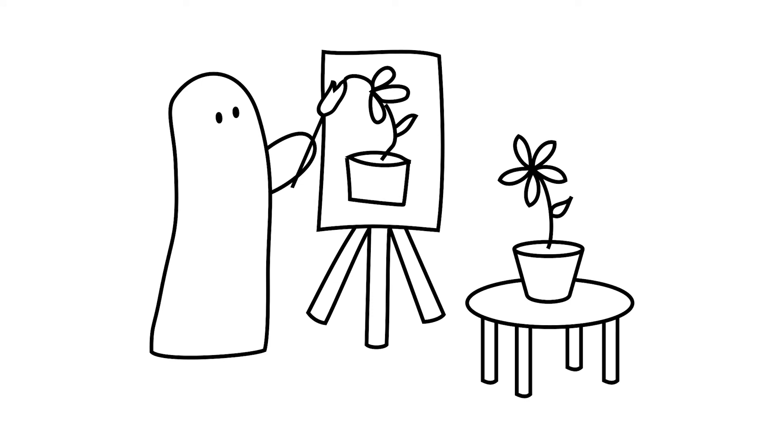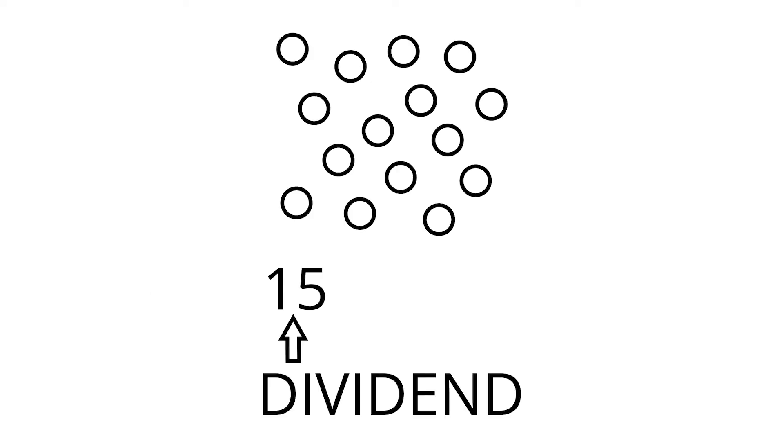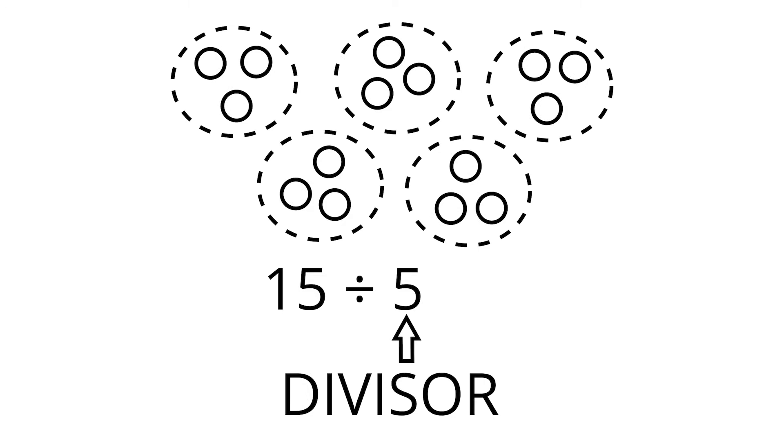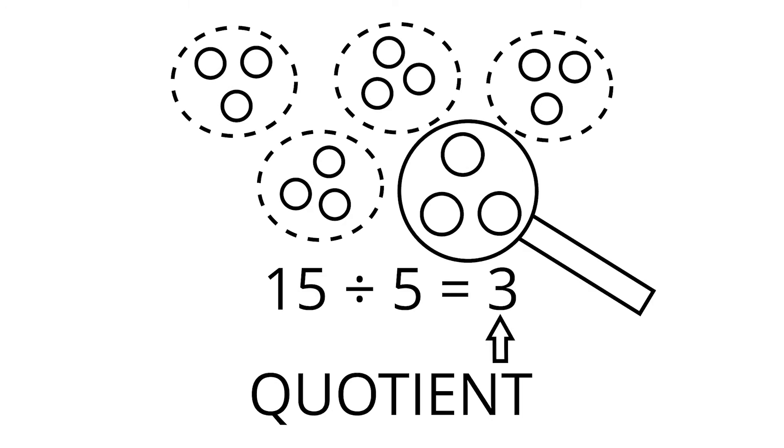In the case of division by zero, this is a helpful visual. Division represents evenly splitting a certain number of objects, the dividend, into a certain number of groups, the divisor, and counting the number of objects in each resulting group, the quotient.